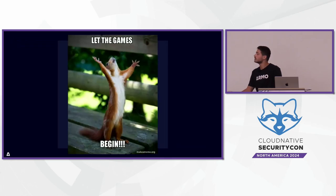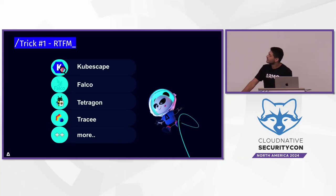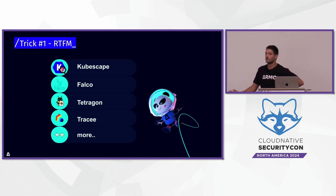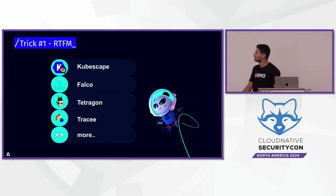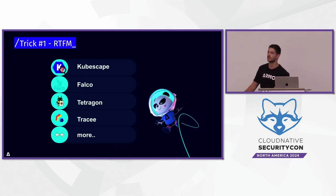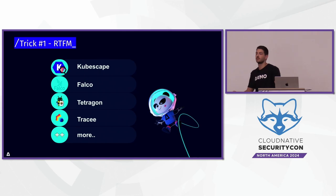Let's see how we can bypass those runtime detection tools. The first trick is very simple: many of the tools are open source — KubeScape, Falco, Tetragon. For attackers, it's very convenient to just look at the code and the custom rules to see what the tools are monitoring. And if you as a company install one of those tools in the open source version without doing any customization, a lot of the predefined rules are not strict enough, so you can easily bypass them as an attacker.